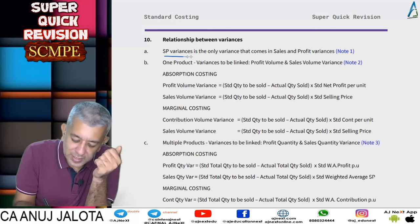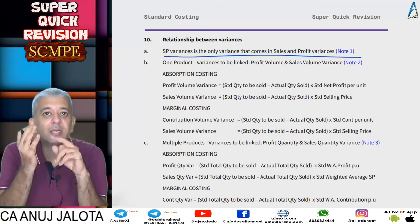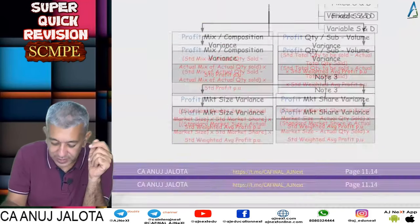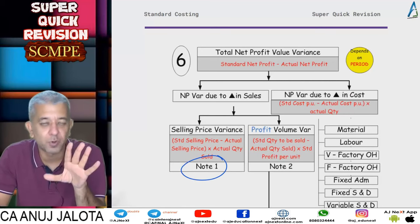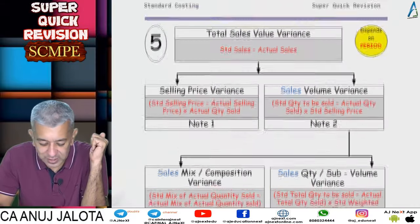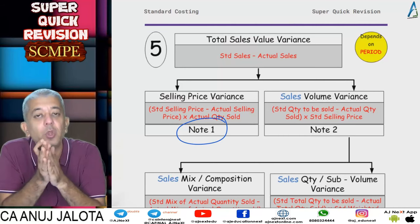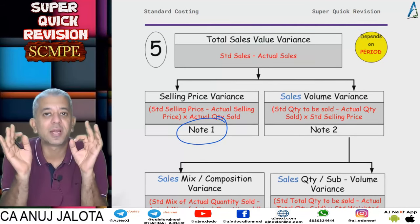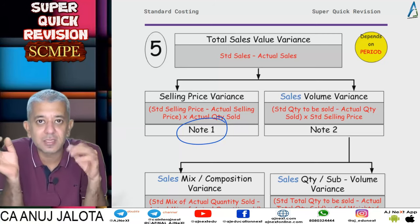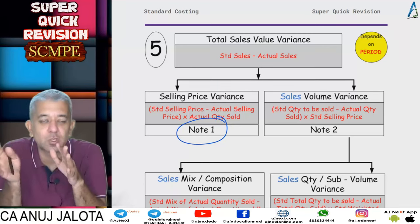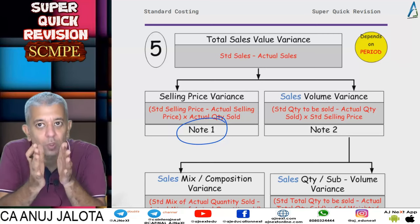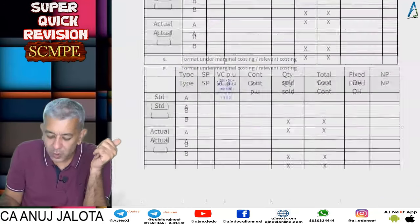First of all, selling price variance is the only variance that comes under sales variances as well as profit variances. Whether it is absorption or marginal costing, it is the same — there is no difference. Under profit variances you get selling price variance, and under sales variances you also have selling price variance. It is calculated as: standard selling price minus actual selling price, multiplied by actual quantity sold.